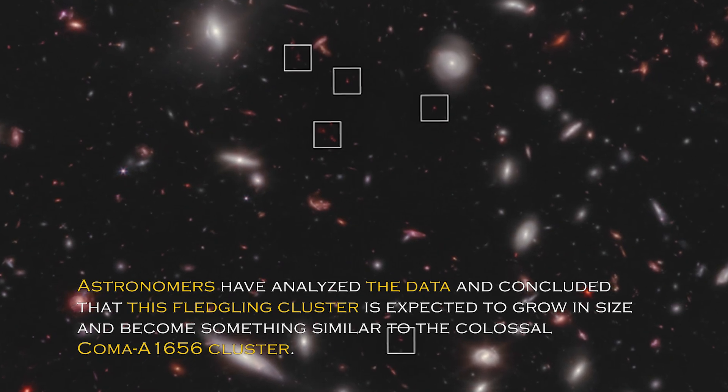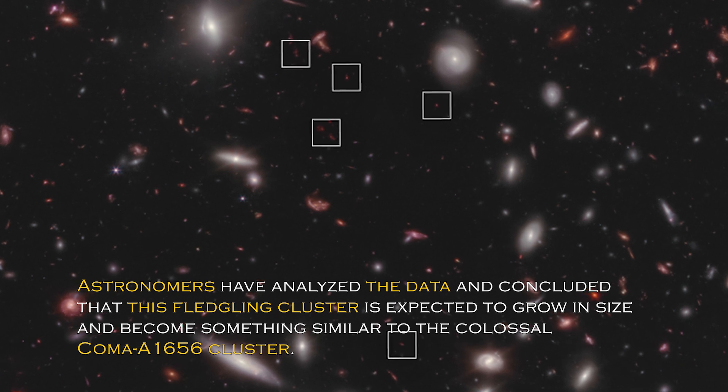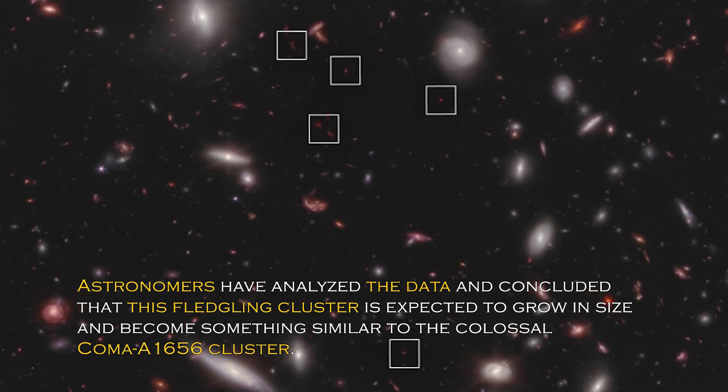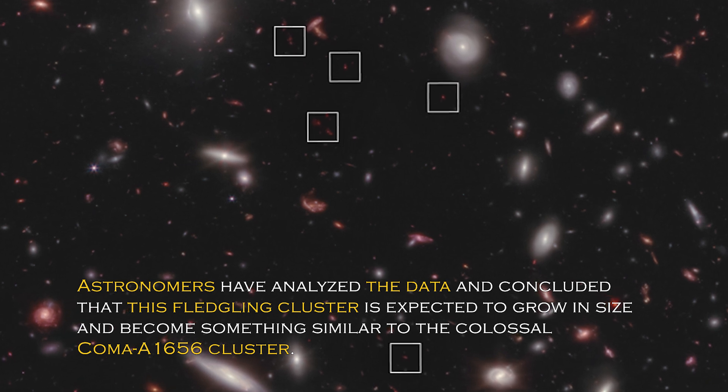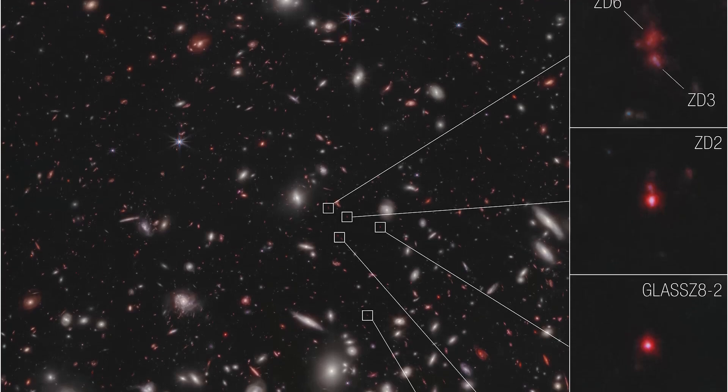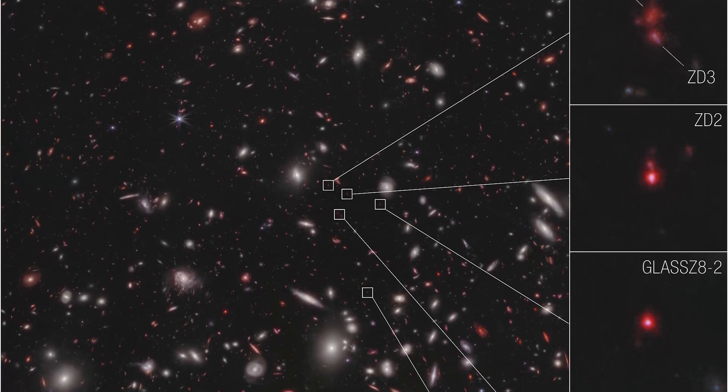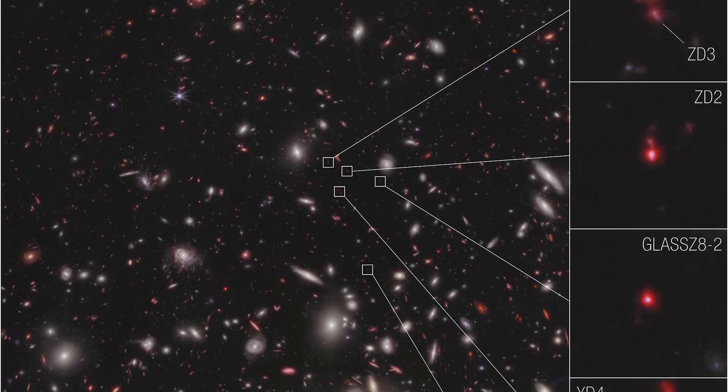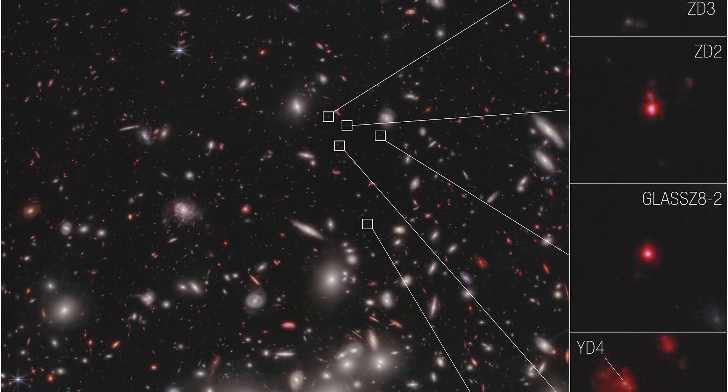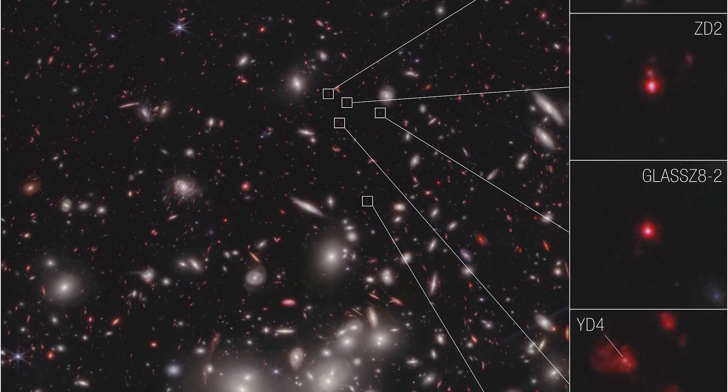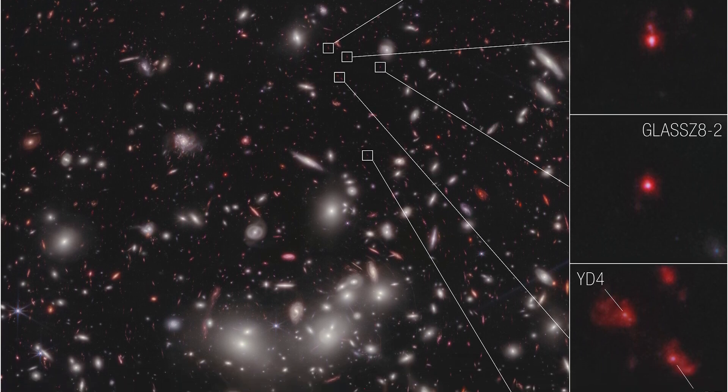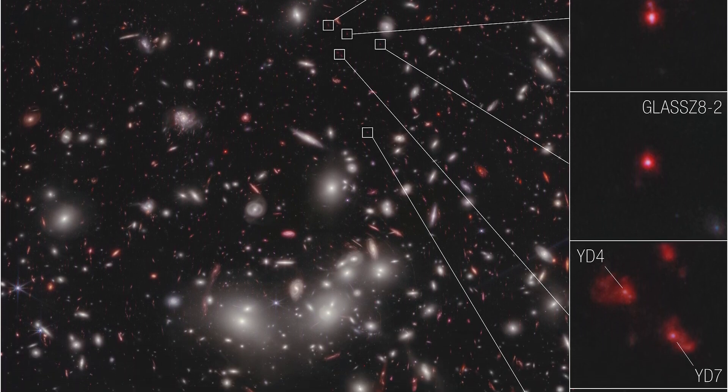Astronomers have analyzed the data and concluded that this fledgling cluster is expected to grow in size and become something similar to the colossal Coma A1656 cluster. The place where all this is taking place is unique and special, as it is in an area of accelerating galactic evolution thanks to the James Webb Space Telescope. Now researchers can measure the velocities of these seven galaxies, which gives them the confidence to confirm that they are bound together in a protocluster.